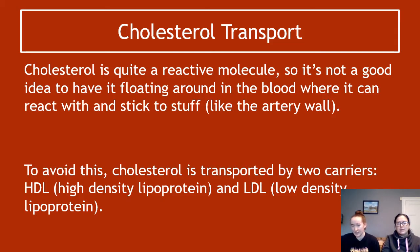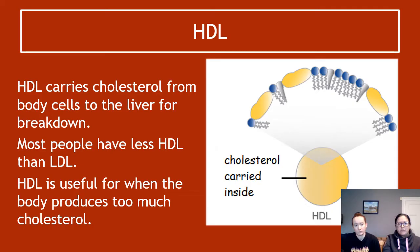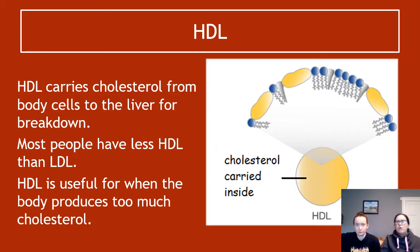To avoid this, cholesterol is transported by two carriers known as HDL and LDL — high density lipoprotein and low density lipoprotein. HDL is the good one — think of it as 'happy DL' to help remember. HDL's job is to take cholesterol from body cells to the liver to get rid of it. Most people have less HDL than LDL, which is generally fine because we still need cholesterol, and HDL is useful when you have too much — which is why we consider it the good carrier.